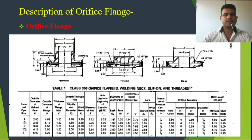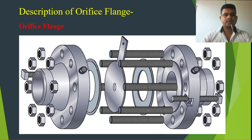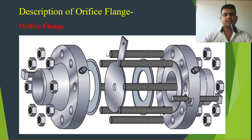For the tap holes, threading, and jack screws, all the standards we follow are from ASME B16.36. You can see in this figure an orifice flange union — two orifice flanges with the orifice plate in between. We need two gaskets inside. You can also see the jack screw here. This is one example of an orifice flange connection.